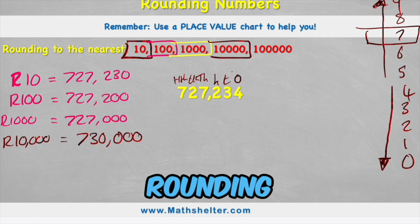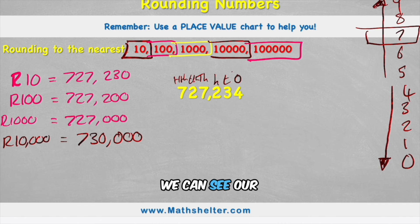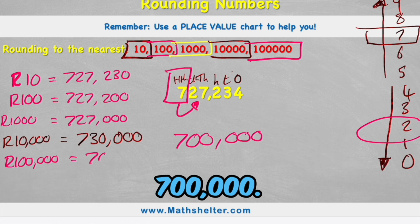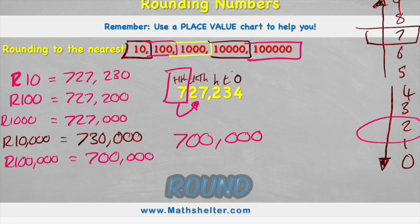Now let's look at our last one rounding it to a 100,000 and we can see a 100,000 column is here. Let's look next door I can see I have a 2 that's in the round down category so we don't need to round 727,000 up to 800,000 we're going to keep it at 700,000. So when we're rounding it to a 100,000 we get to 700,000 and there you go that is how to round numbers to the nearest 10, 100, 1000, 10,000 and 100,000.